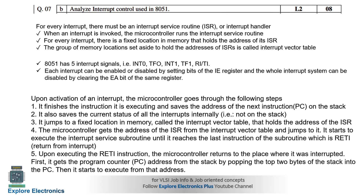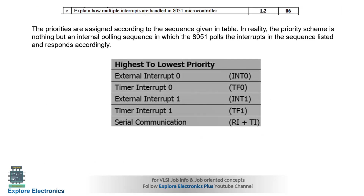The next question asks how multiple interrupts are handled in the 8051 microcontroller. When multiple interrupts occur, they must be handled carefully using a priority system. The priority table shows that external interrupt zero has the highest priority, followed by timer interrupt zero, external interrupt one, timer interrupt one, and serial communication having the lowest priority.